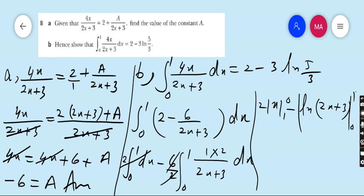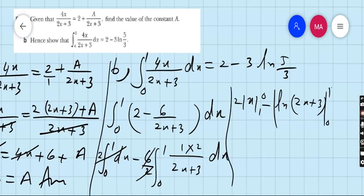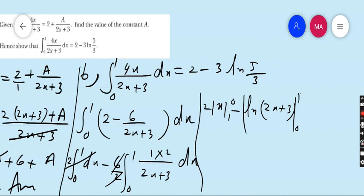Apply the limit. 2 times upper limit 1 minus 0, this is the limit of x. Now apply: 2 times 1 equals 2, minus 3 times ln(2 times 1 plus 3 equals 5), so ln 5, minus ln(2 times 0 plus 3 equals 3), so ln 3.